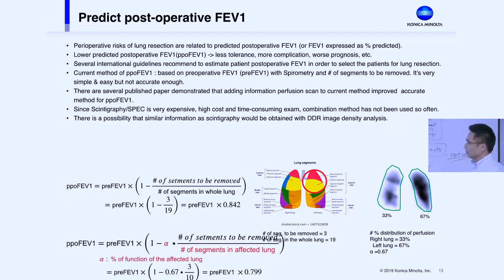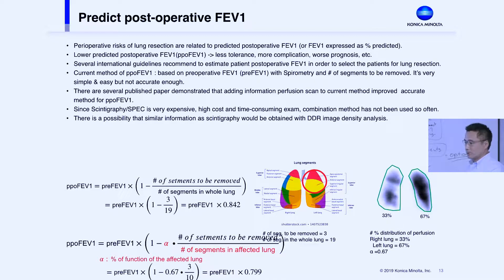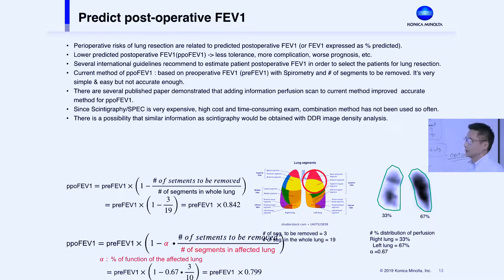Usually the whole lung segment number is 90, and if they remove three segments, then the predicted post-operative FEV1 is calculated accordingly. If this number is less than a certain threshold value, then the surgeon decides whether this patient should undergo the surgical procedure or not. This is a very important parameter for lung cancer resection. Lower post-operative FEV1 is linked to worse outcomes.